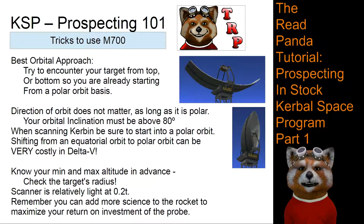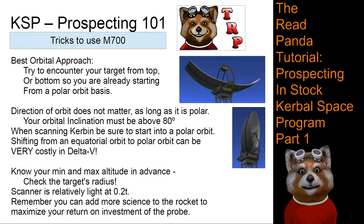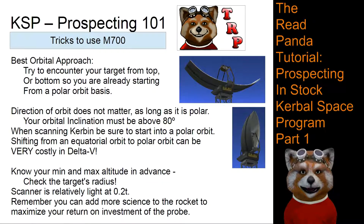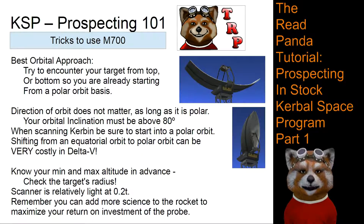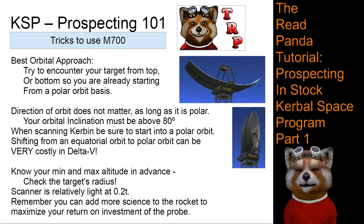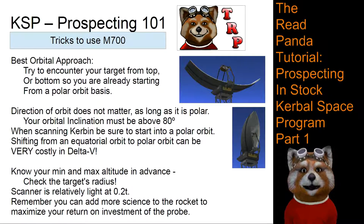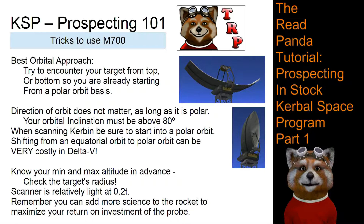Remember to check your minimum and maximum altitudes in advance before approaching a body. Also make sure it is a viable body to scan — there are some very small bodies, like Gilly and certain outer planets mod bodies, where it can be hard to get within the required radius. The scanner is relatively light at 0.2 tons (200 kg), so you can get away with a lightweight rocket. In career or science mode, pack some science instruments since a polar orbit will pass over every biome.